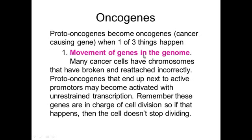One of three things can happen to a proto-oncogene to make it become an oncogene. First of all, you can have movement of genes in the genome.